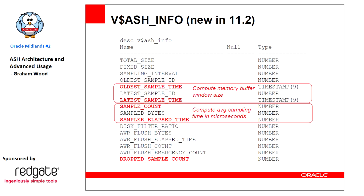Sampler elapsed time tells how long it actually took to capture the data — we hadn't been collecting this until 12c, but we now have more instrumentation. Even on a system with thousands of sessions, we're still in microseconds for those captures. The drop sample count shows cases where we went around twice and couldn't get a consistent copy of the session state object.